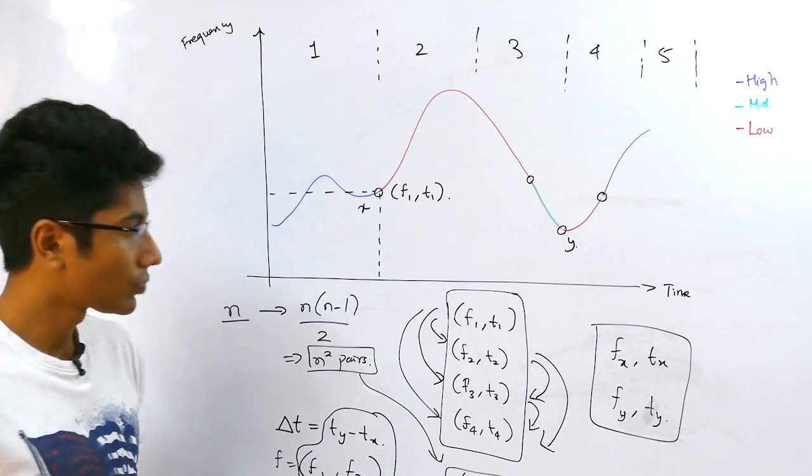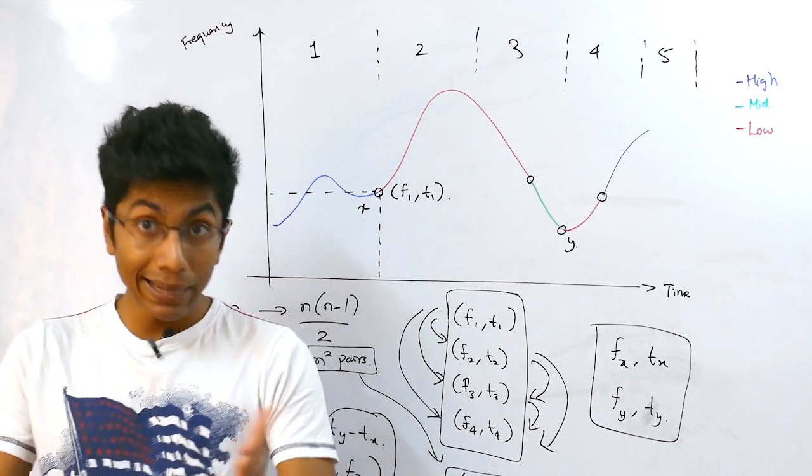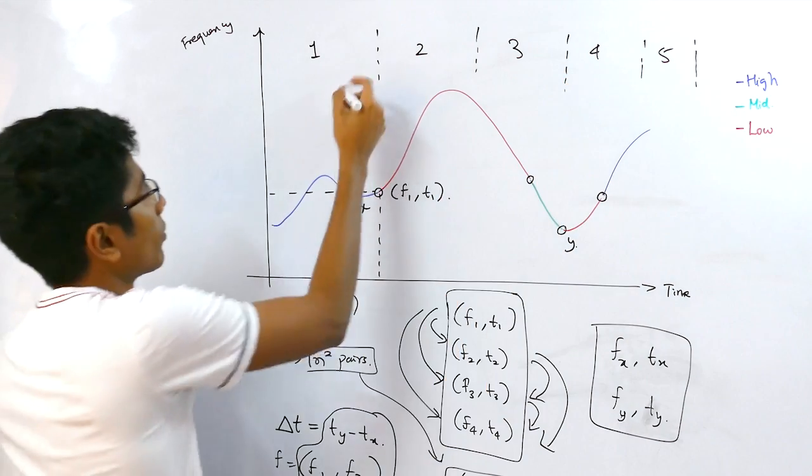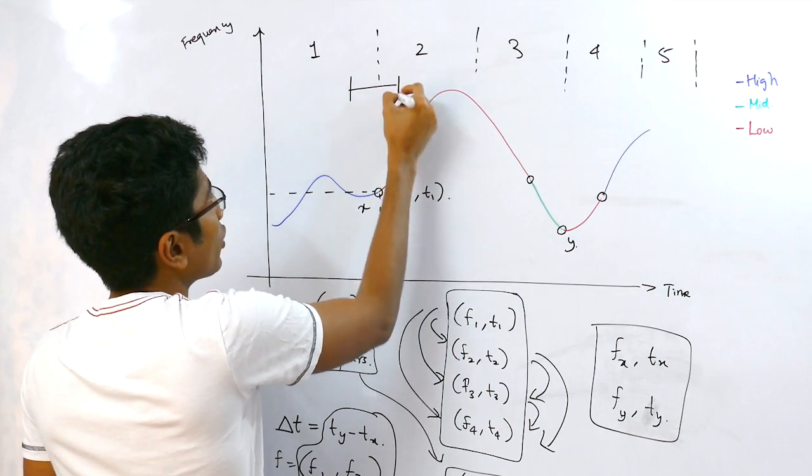But there's a problem. Your query chunk could be any point. It doesn't need to be neatly broken into the chunks that we have. You can see that your query might be from here to here. How do we handle a query which falls between two chunks?